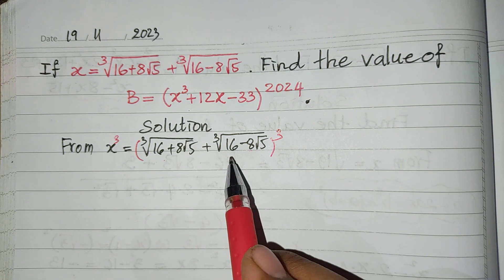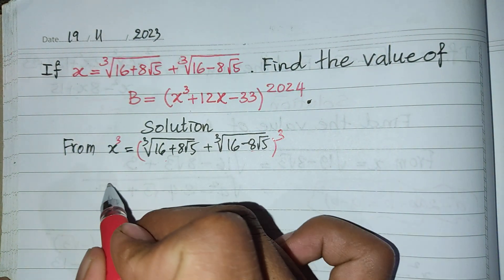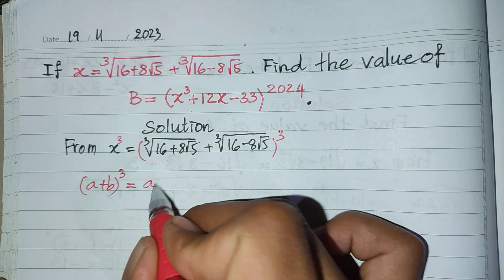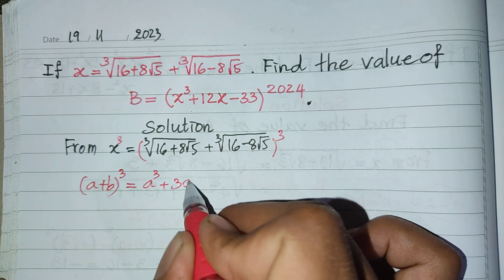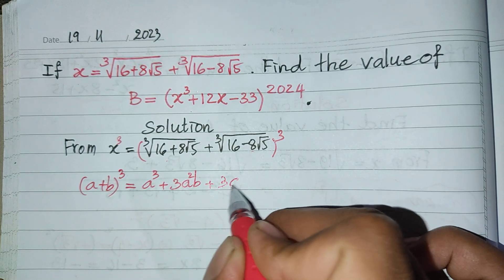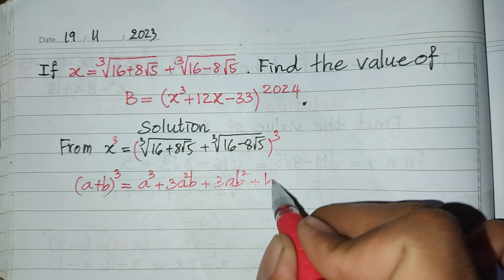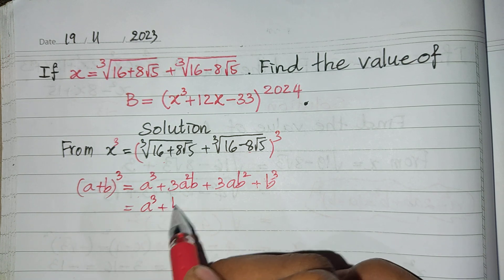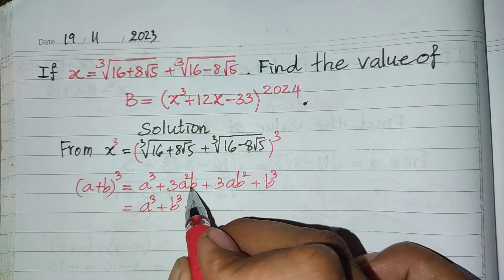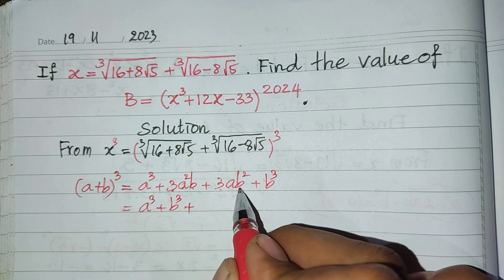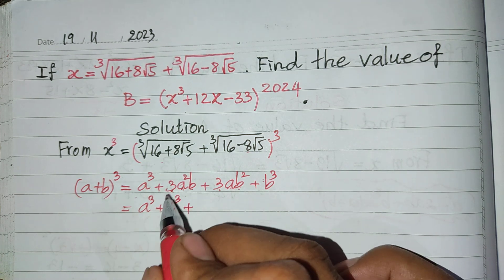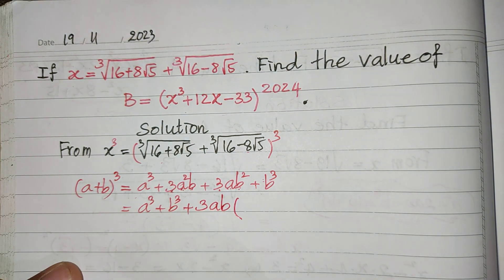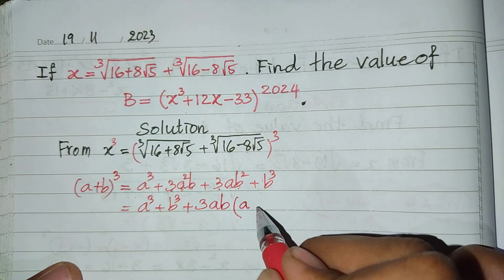We use the formula: (a + b)³ = a³ + 3a²b + 3ab² + b³, which can be rewritten as a³ + b³ + 3ab(a + b). So I take 3ab out, giving 3ab multiplied by (a + b).